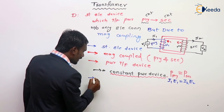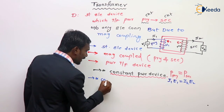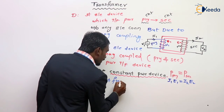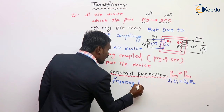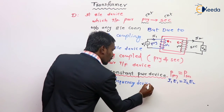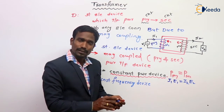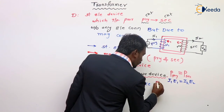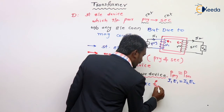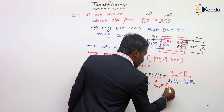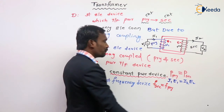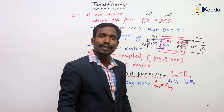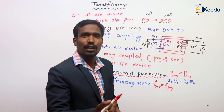And next: transformer is a constant frequency device. This means the frequency of the secondary winding is exactly equal to the frequency of the primary winding.